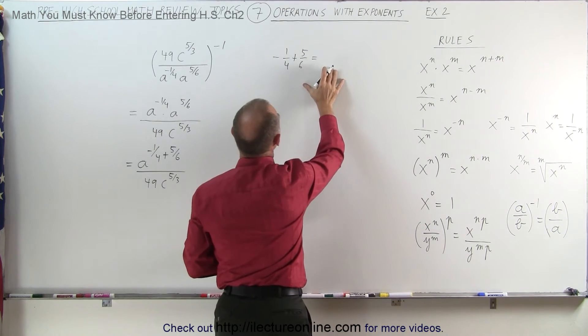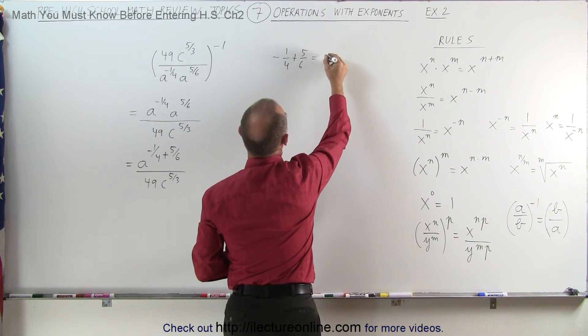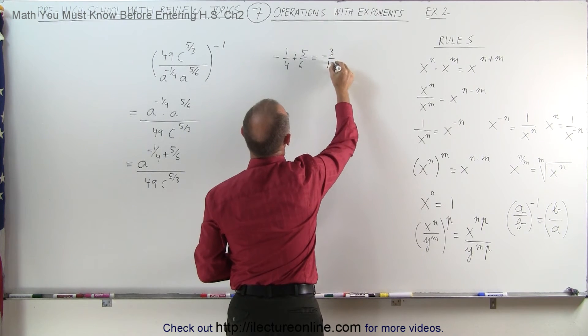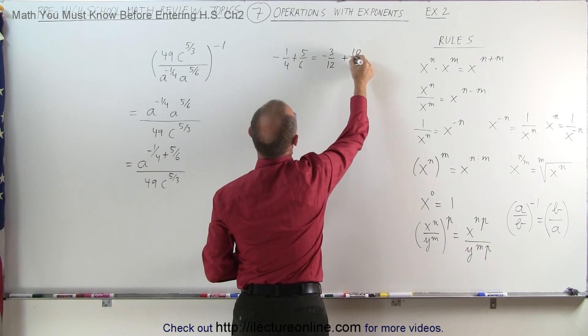So the common denominator is 12, which means this can be written as minus 3 over 12 and plus 10 over 12.